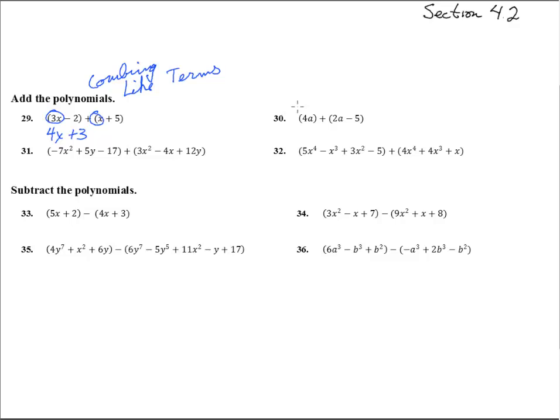Number 30, here we have a 4a — that's a monomial — plus this binomial over here. 4a plus 2a is 6a, and minus 5.